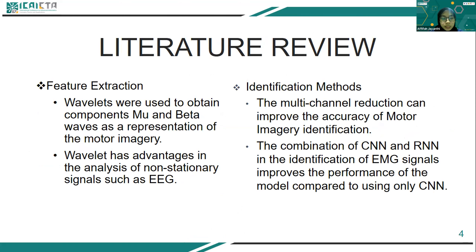The next is literature review. Identification on BCI-EEG has been done with various extraction and identification methods. In feature extraction, wavelets were used to obtain component frequency and data wave as a representation of motor imagery. Wavelets have advantages in the analysis of non-stationary signals such as EEG. In identification methods, multi-channel reduction can improve the accuracy of motor imagery identification, and combination of CNN-RNN in the identification of EMG signals improves the performance of the model compared to CNN only.